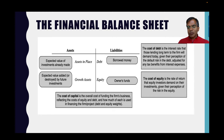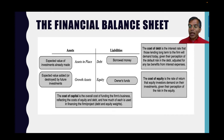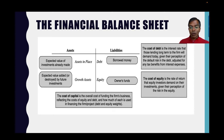One of my favorite structures for thinking about a business is a financial balance sheet, as opposed to an accounting balance sheet. In a financial balance sheet, you break down a business into investments it's already made — assets in place — and investments you expect to make in the future, growth assets. There are only two ways you can fund this business: you can borrow the money or use your own money. Borrowed money is debt; using your own money is equity. With a publicly traded company, that equity can come from shareholders and debt can come from bondholders.